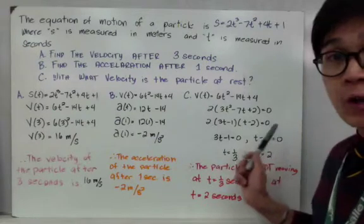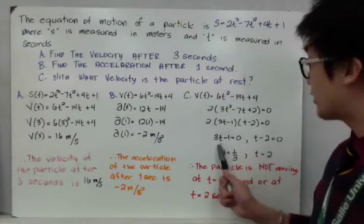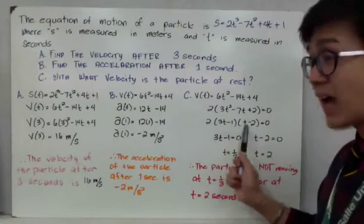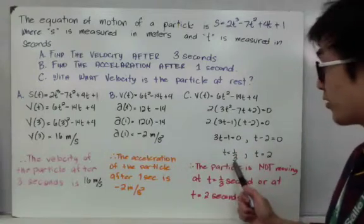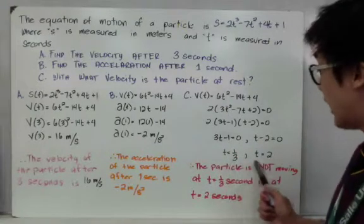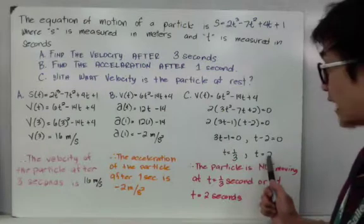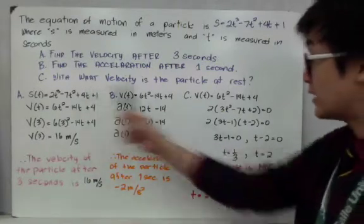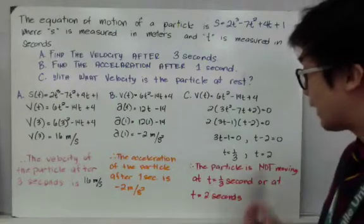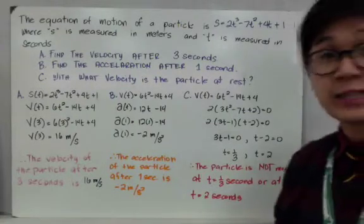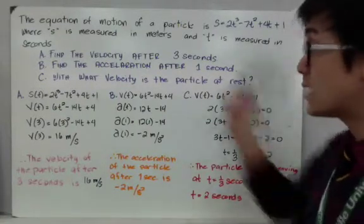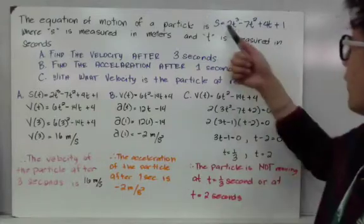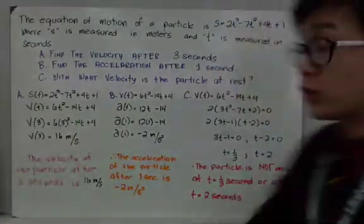And using zero product property, we can find the values of t for each factor. So we have t equals 1 third for our first factor, and t equals 2 for our second factor. Therefore, to answer letter C, the particle is not moving at t equals 1 third second or at t equals 2 seconds. And this is how we answer questions given the function of your rate of change.